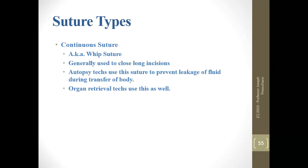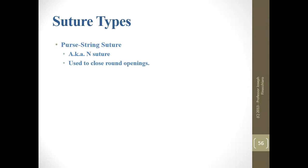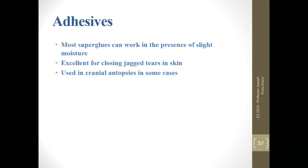The purse string suture is used to close round openings. In severely decomposed bodies — especially bodies that have atrophy of the anus, or if you have a trocar button that doesn't want to stay put — you might have to use a purse string or end suture.